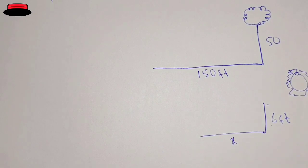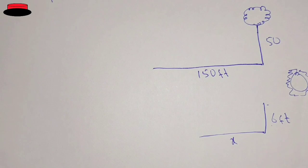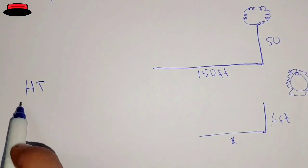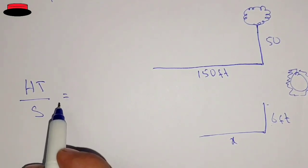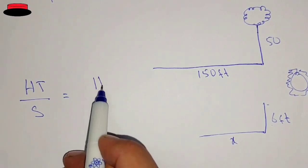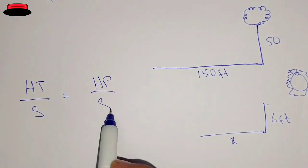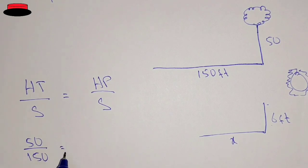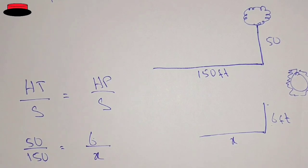The ratio of the shadow of both the tree and the person will remain the same. So we write the equation: height of the tree divided by shadow of the tree equals height of the person divided by shadow of the person. That gives us 50 divided by 150 equals 6 divided by x.